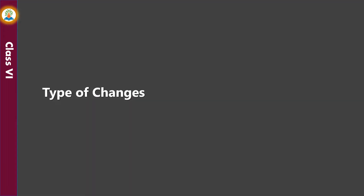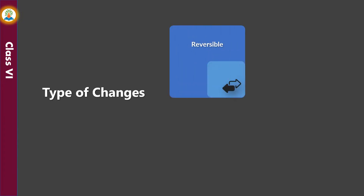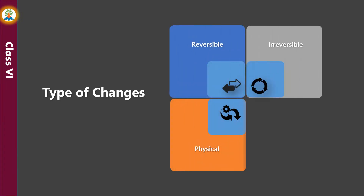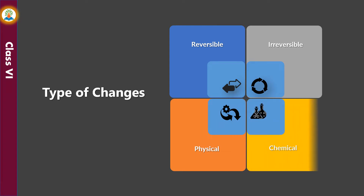On the basis of some properties, changes can broadly be grouped as: reversible change, irreversible change, physical change, and chemical change.